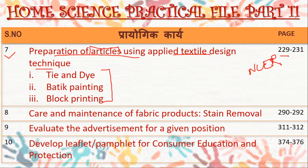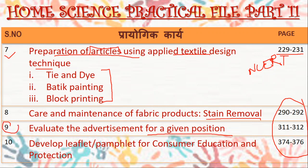As per the NCRT book, these practicals are given on pages 229 to 231. You can refer to the book for the written part. The eighth question would be care and maintenance of fabrics, that is the removal of stains. The ninth question is evaluation of advertisement for a given position. This was not included in the final paper of the practicals, but you have to write it down in the practical file. This chapter was also deleted from your syllabus, but the practical was not excluded.